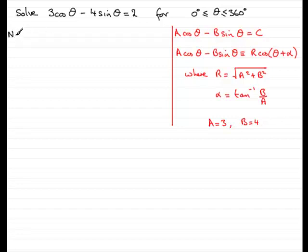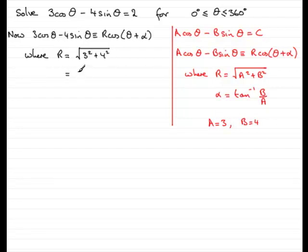So what you would write ought to be something along these kind of lines. We've got that the left hand side, 3 cos theta minus 4 sin theta, is identical to R cos theta plus alpha. So we need to calculate R, so we would know that R is the square root of A squared plus B squared. And we've seen that A is 3 and B is 4. So that'd be the square root of 3 squared plus 4 squared. Square root of 9 plus 16, square root of 25 then, which is 5. So we've got R is 5.